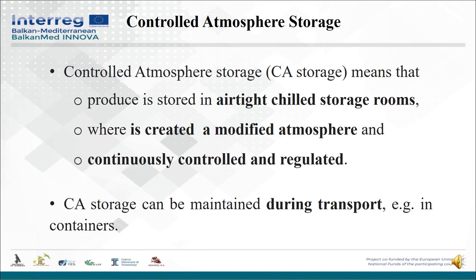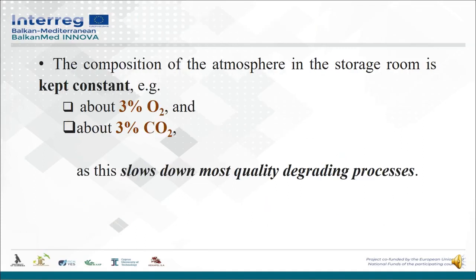As for controlled atmosphere storage, that means that the produce is stored in an airtight chilled storage room where a modified atmosphere is created and continuously controlled and regulated. Controlled atmosphere storage can be maintained during transport in containers. The composition of the atmosphere in the storage room is kept constant, such as oxygen kept at 3% and carbon dioxide at 3%, as they slow down the most quality-degrading processes.